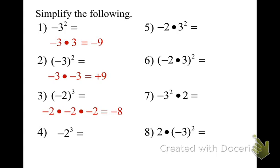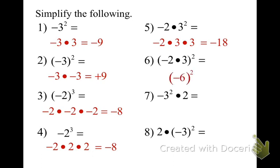The next one is negative 2 times 2 times 2, which also makes negative 8. Negative 2 times 9 is negative 18. In this case it simplifies to negative 6. Negative 6 squared is 36. The first one gives negative 9 times 2 is 18 — remember, when squaring the 3, you're only squaring the 3, not the negative, because it's not in parentheses. And the last one is 2 times 9, which is 18.